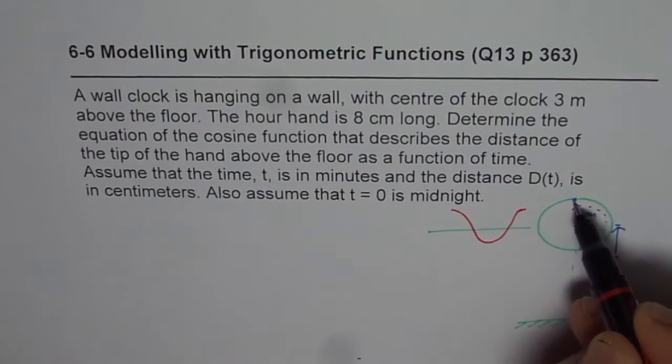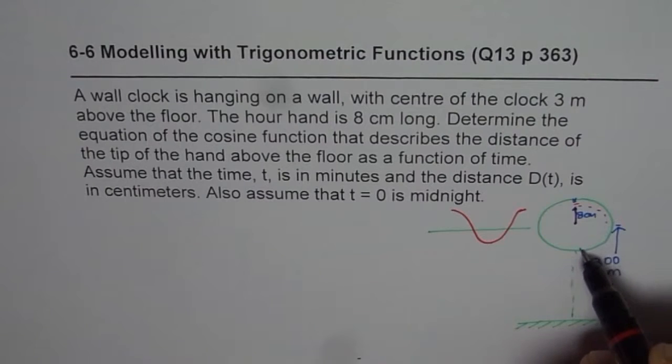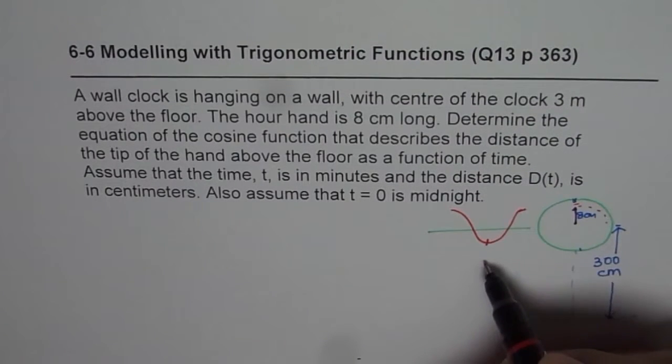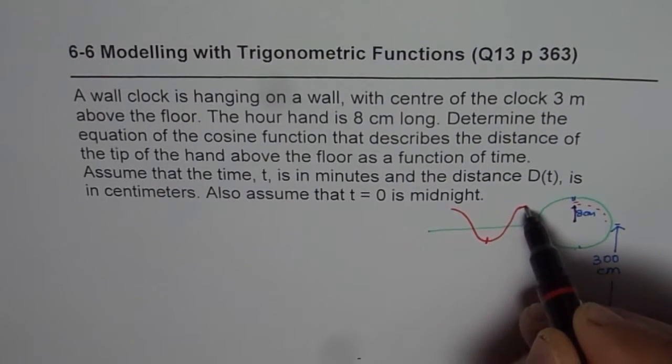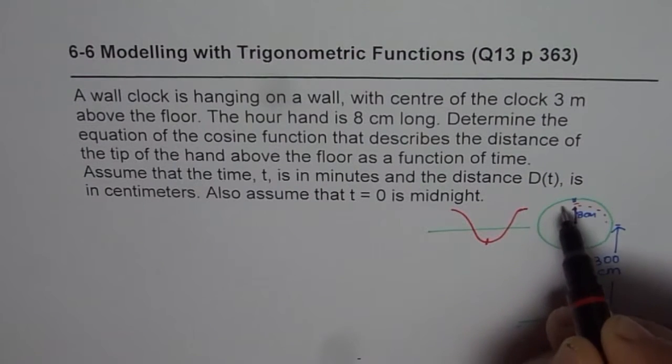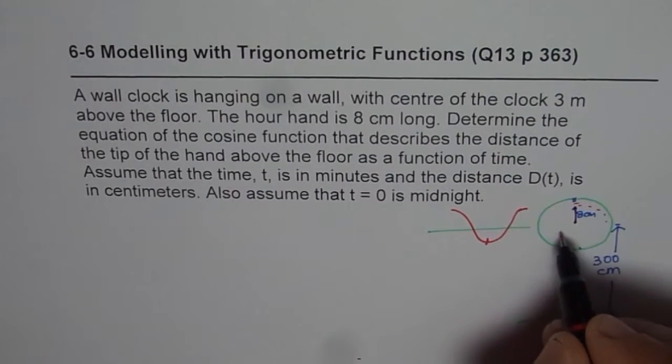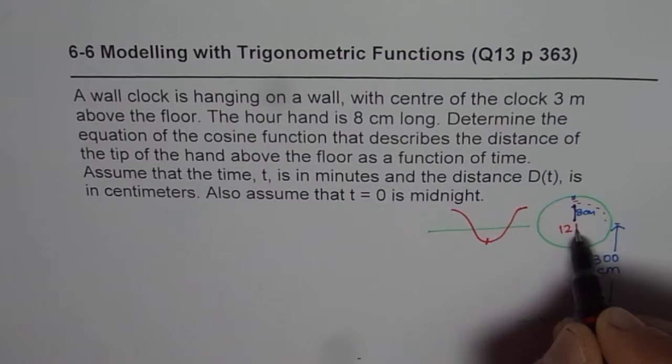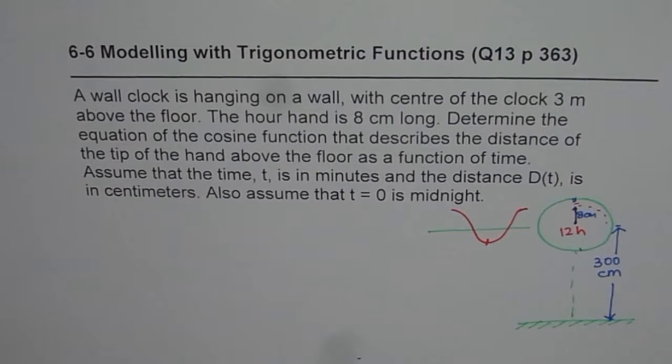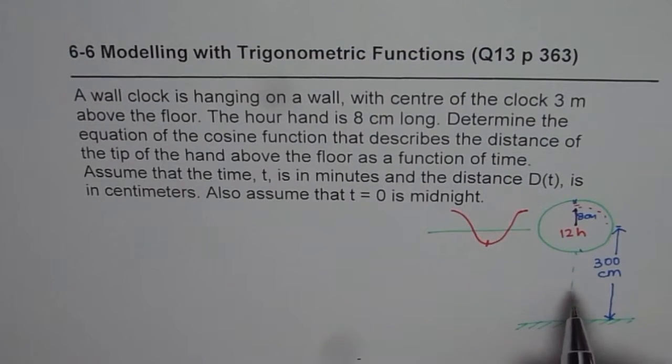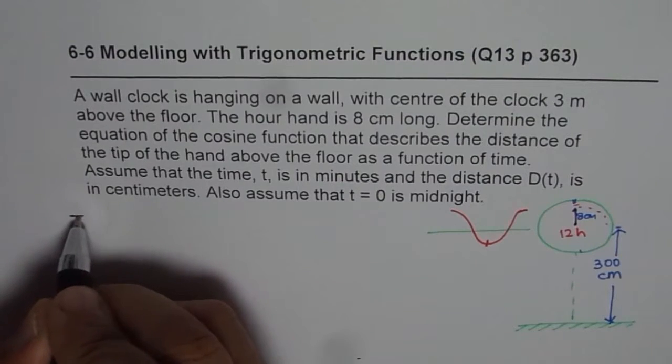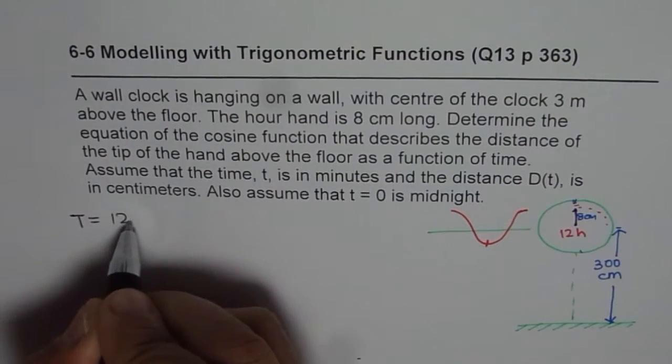So it starts with the maximum, then goes down and then comes up. So this is when it goes down and then it goes up. Now one cycle for the hour hand takes how much time? It takes 12 hours. So one cycle is 12 hours. So in this particular case, what we know is that the time period is 12 hours.